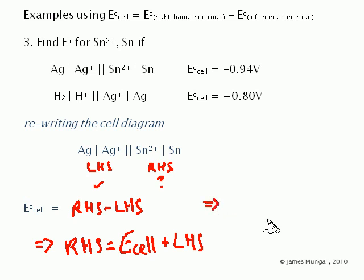Which equals E_cell, so -0.94 volts, plus the left-hand side, so +0.80 volts, which gives -0.14 volts.